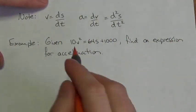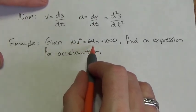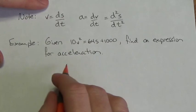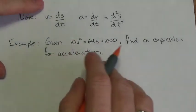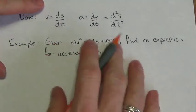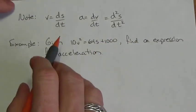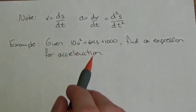The first example: given that 10v² = 64s + 1000, we're being asked to find an expression for acceleration. I need to take a derivative to get the acceleration. But notice that there's no t here — you are not seeing the independent variable explicitly in this expression.